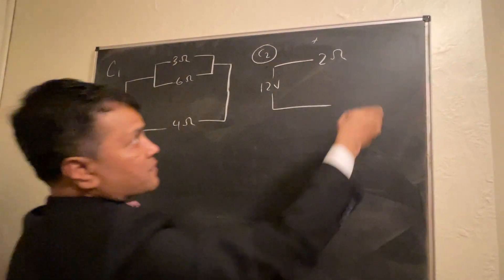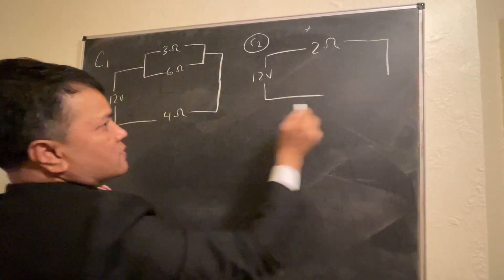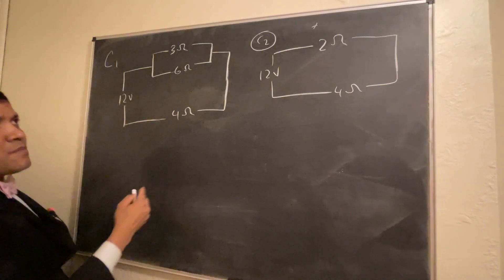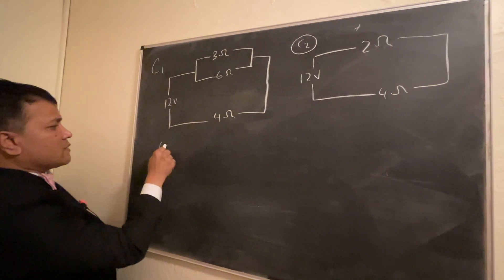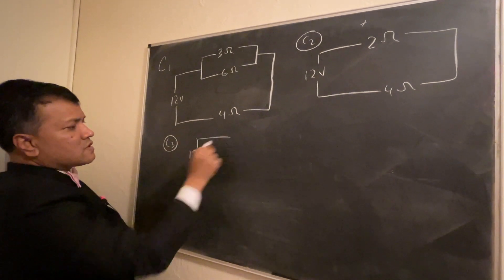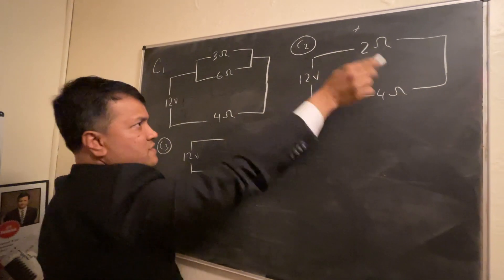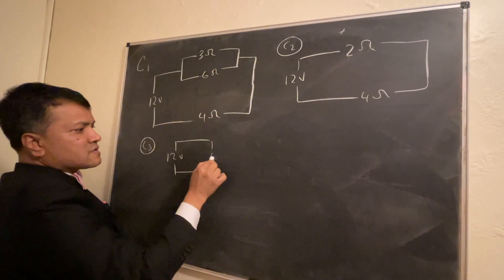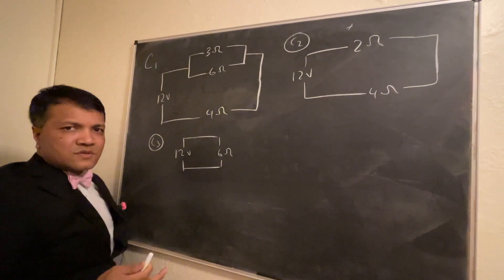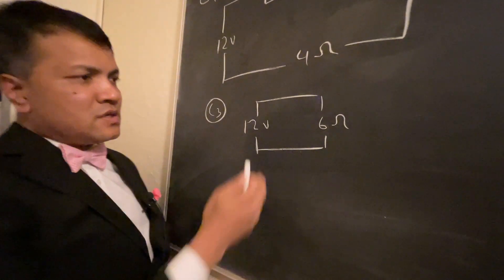So three and six in parallel gives two ohms, and we still have the four ohm resistor. Now we can decompose it to circuit number three. Circuit three has 12 volts and the two resistors are in series, so we get six ohms total.